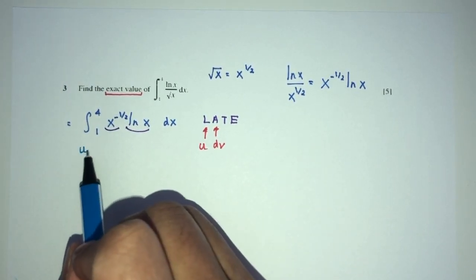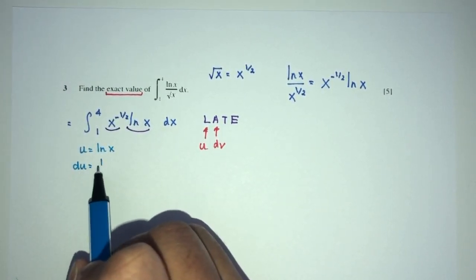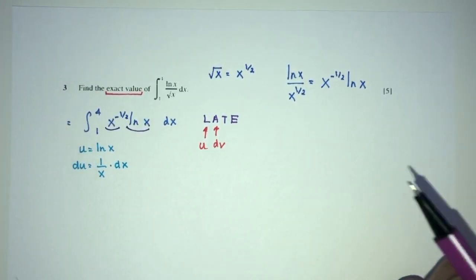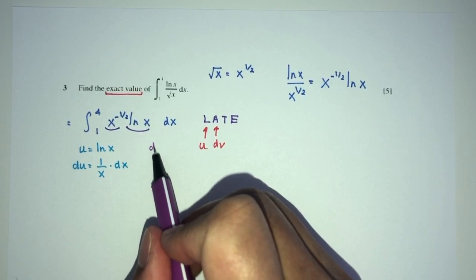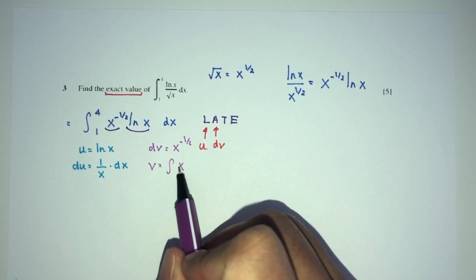u will be equal to ln of x. Hence, du will be 1 over x dx. Similarly, we have dv will be x power this one. So, v will be integration of this one.